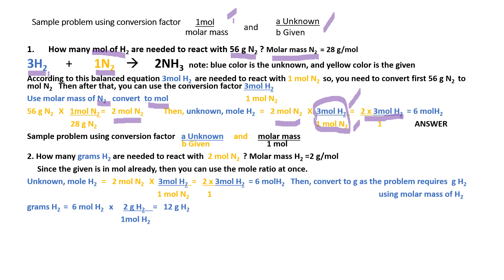Another problem using the mole ratio and then the molar mass: How many grams of hydrogen are needed to react with 2 moles of nitrogen? The moles are already given, so you can use the mole ratio at once. The unknown moles of hydrogen equals the given 2 moles of nitrogen times the mole ratio, where the unknown is on top and the given is on the denominator.